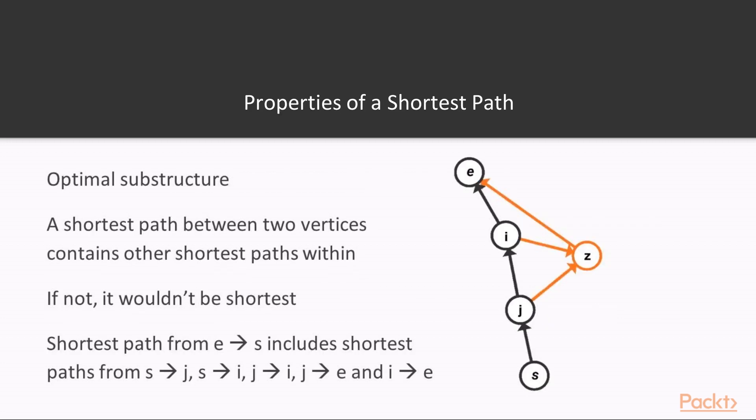One of the first properties we realize of a shortest path is that a shortest path exhibits optimal substructure. This means that a shortest path between two vertices contains other shortest paths within it, and that a shortest path can be broken down into the smallest shortest paths which are the edges between vertices. To prove that a shortest path has optimal substructure is quite simple. If there was a more optimal sub-path, then our path would not be the shortest.